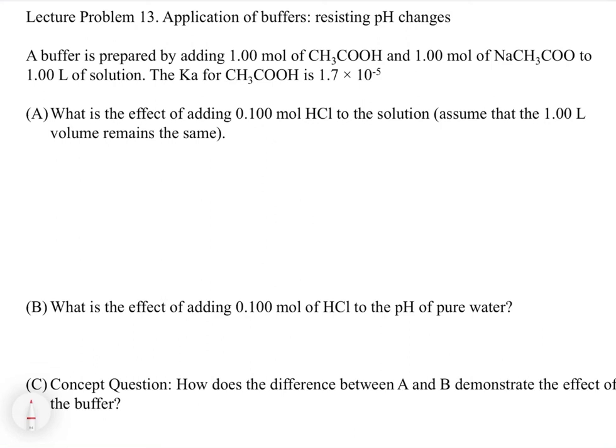A buffer is prepared by adding one mole of acetic acid and one mole of acetate to a one liter solution. The Ka for acetic acid is 1.7 times 10 to the minus 5. Before we get started, we're going to do a quick calculation to figure out where we are in terms of pH.